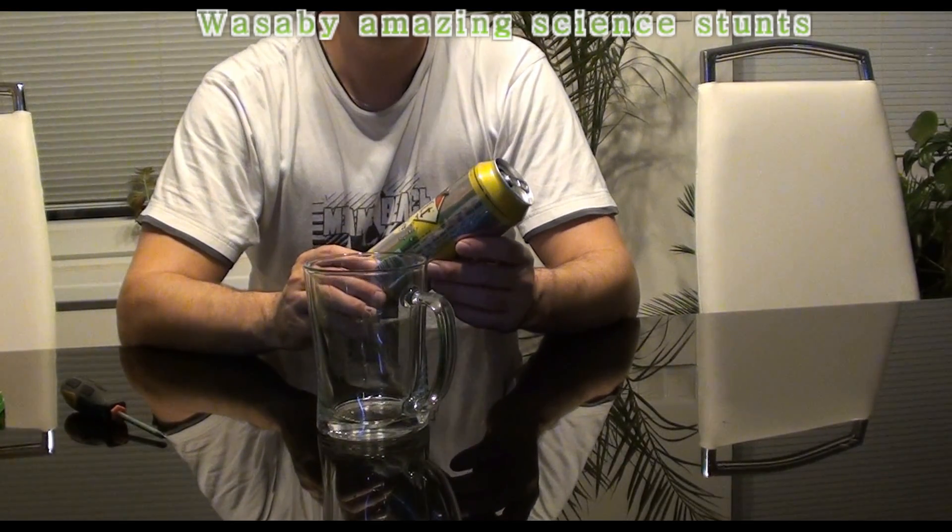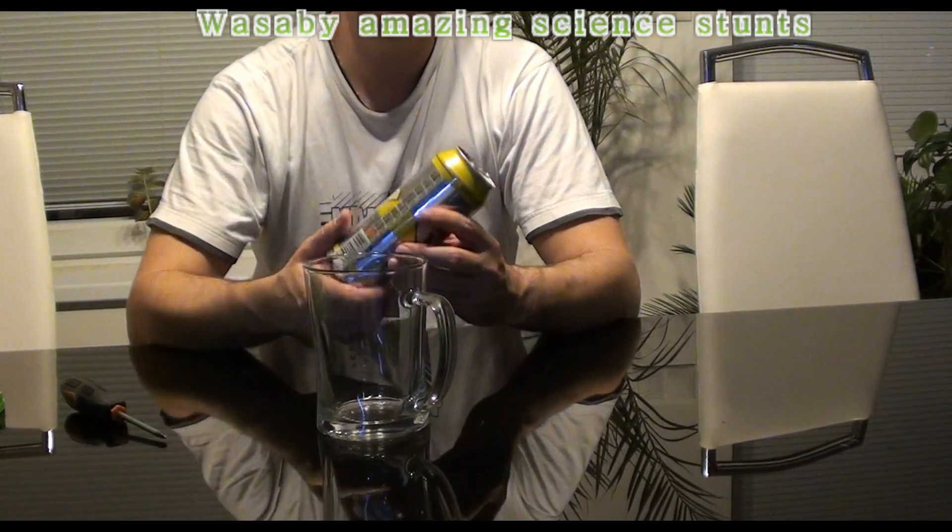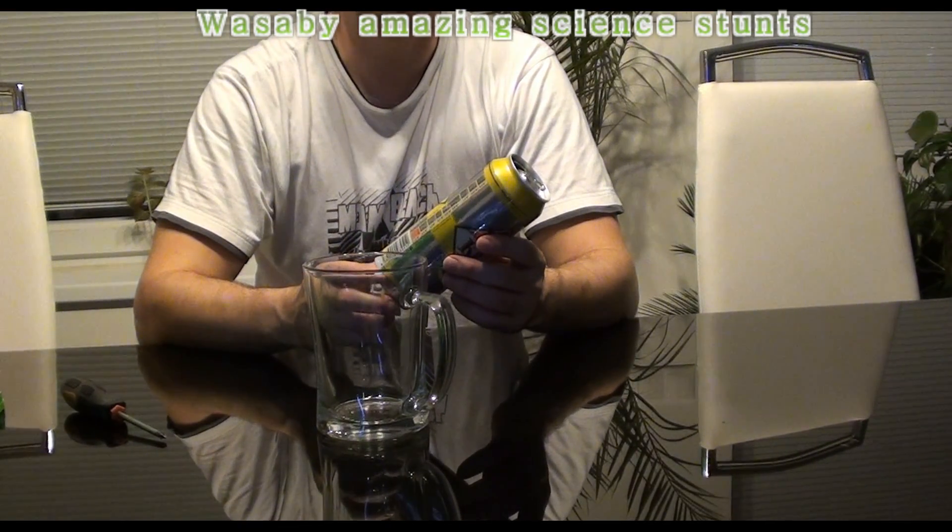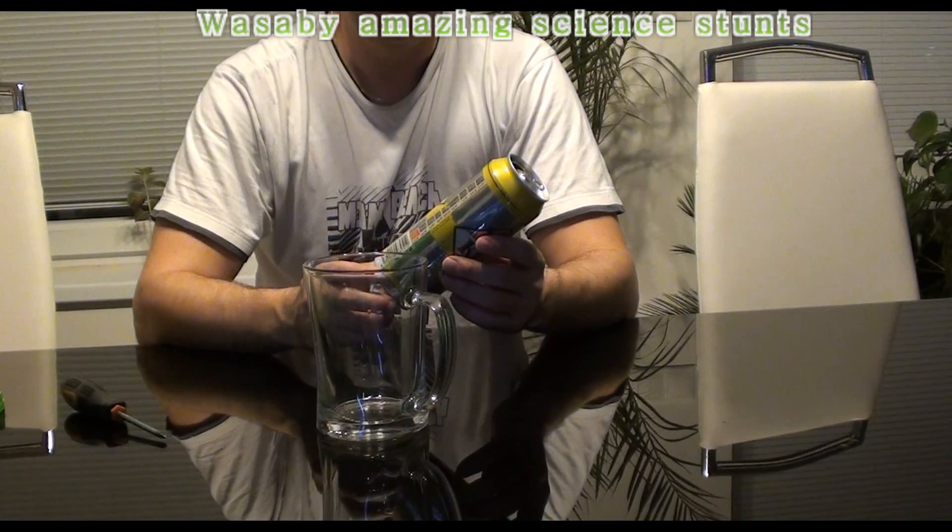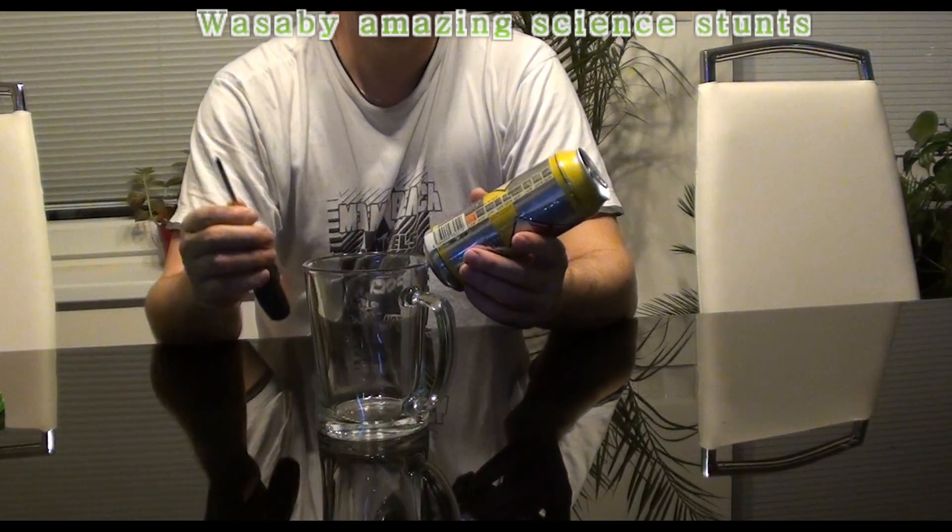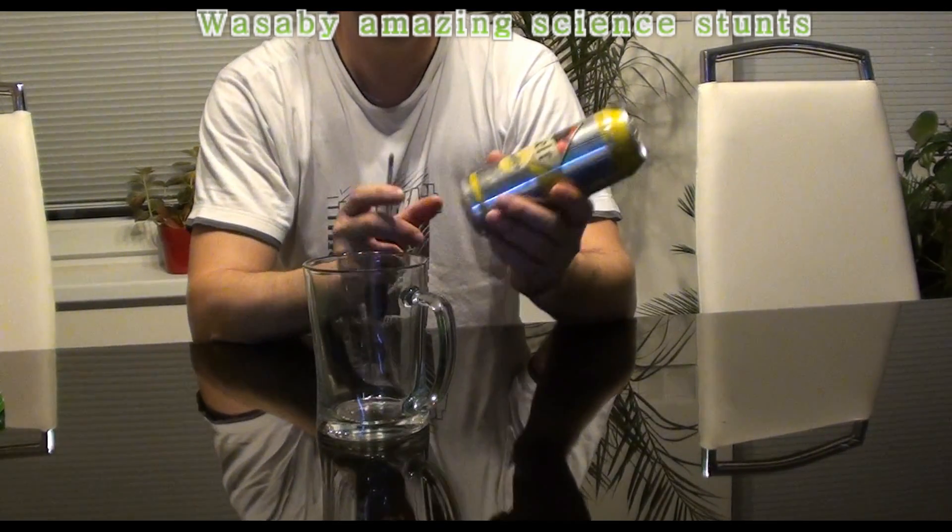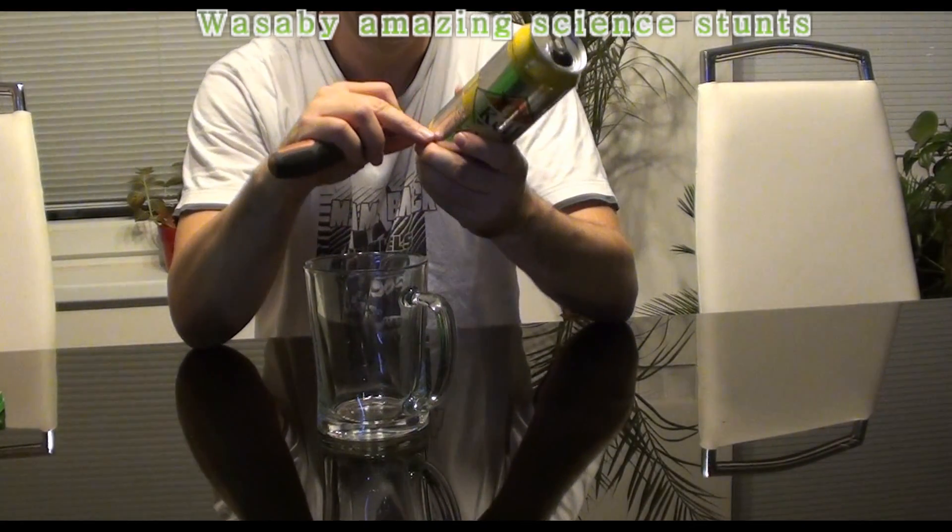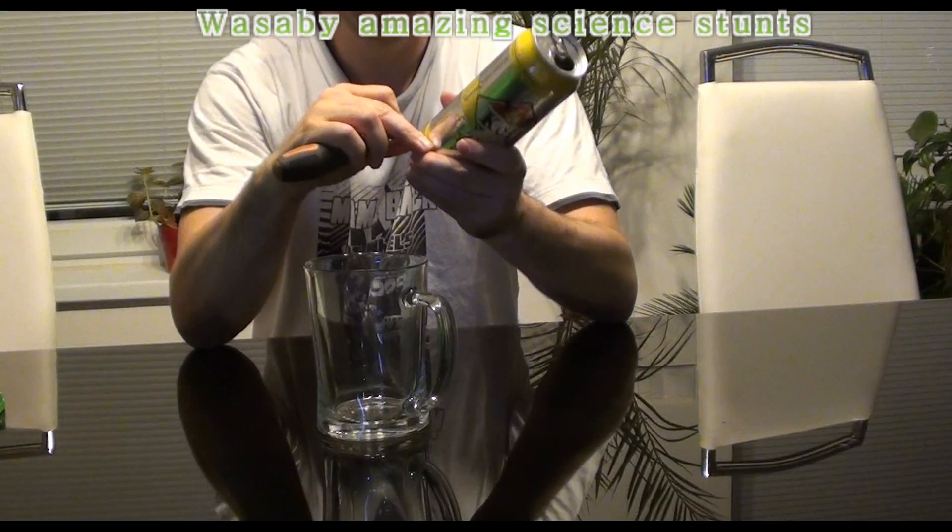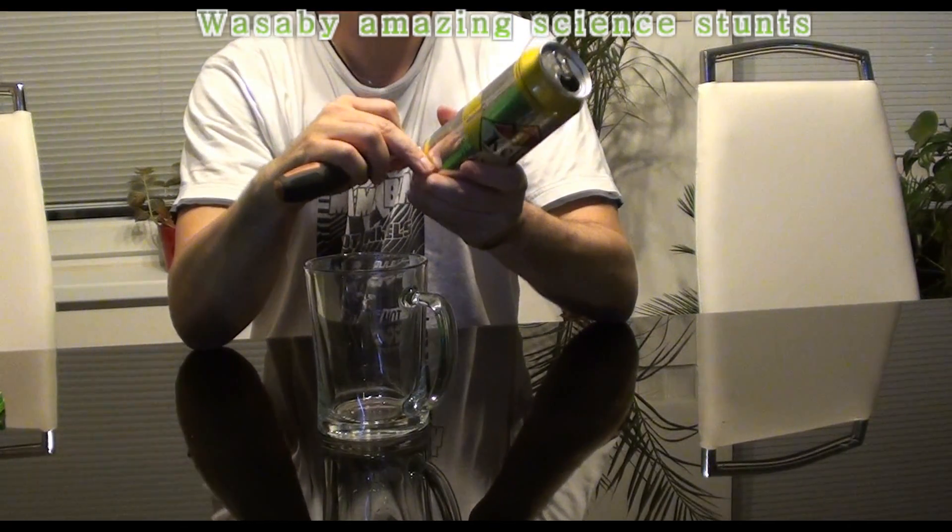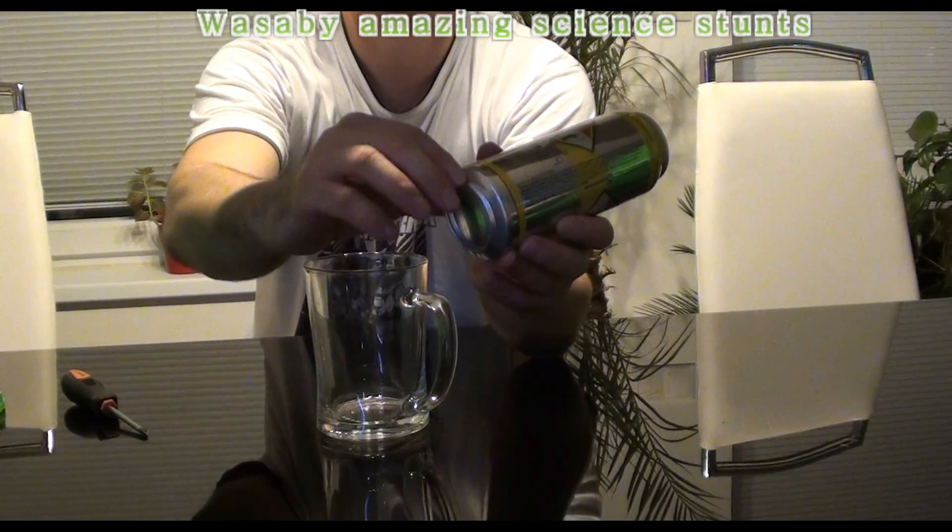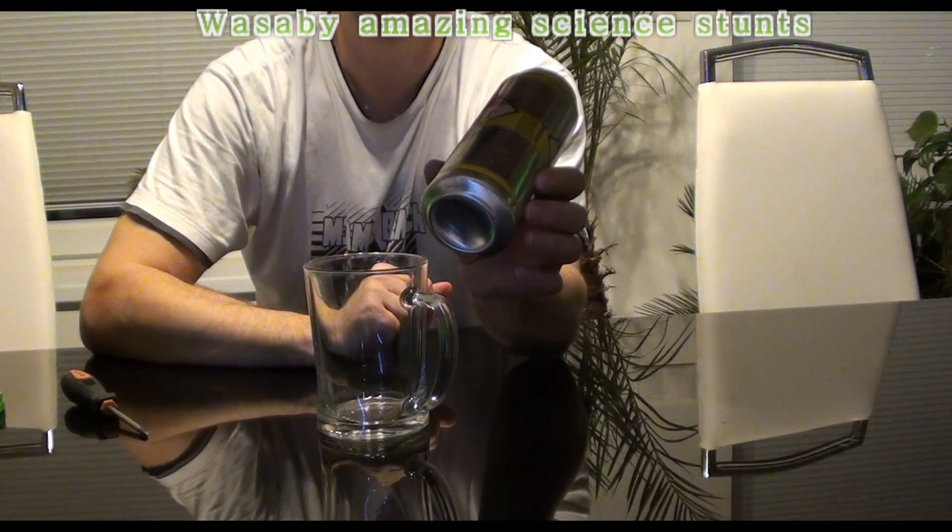All you need to have is an empty can. You have to be really sure that the can is empty, that there is no beer or something left. What else do you need? You need to change the shape of the can from the downside. I will push inside a little bit to change the shape from the downside of the can.